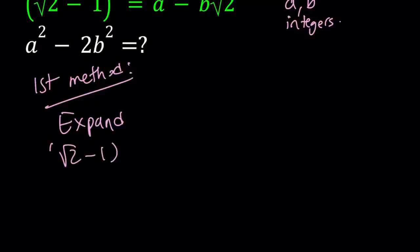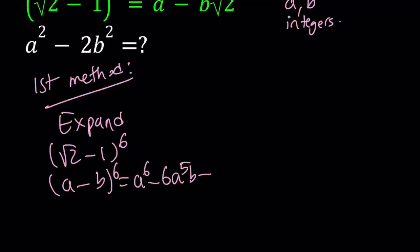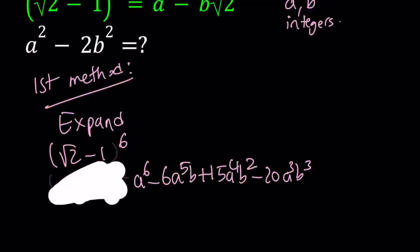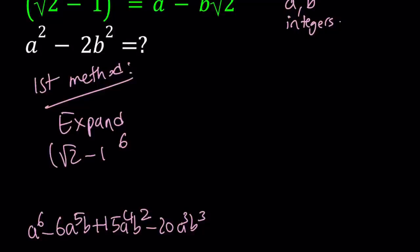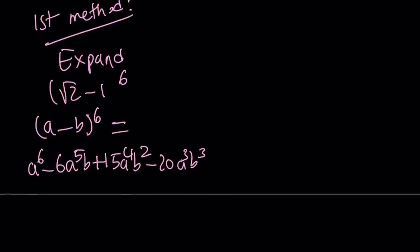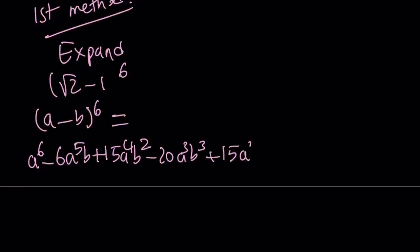This is good practice, especially if you're learning about the binomial theorem. Remember, a minus b to the 6th power can be written as a to the 6th power minus 6a to the 5th power b plus 15a to the 4th power b squared, minus 20a cubed b cubed, and then it repeats symmetrically: plus 15a squared b to the 4th, minus 6a b to the 5th power, plus b to the 6th power.